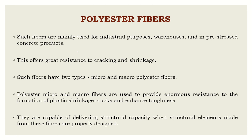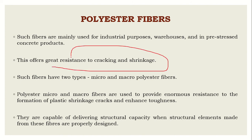Polyester fibers are mostly used for industrial purposes and in the manufacture of precast concrete products such as precast elements and slabs. They give high resistance against cracking and shrinkage. There are two types: micro and macro polyester fibers, both used to provide resistance to plastic shrinkage cracks. When concreting in very hot weather conditions where water loss is likely, polyester fibers help control this shrinkage.